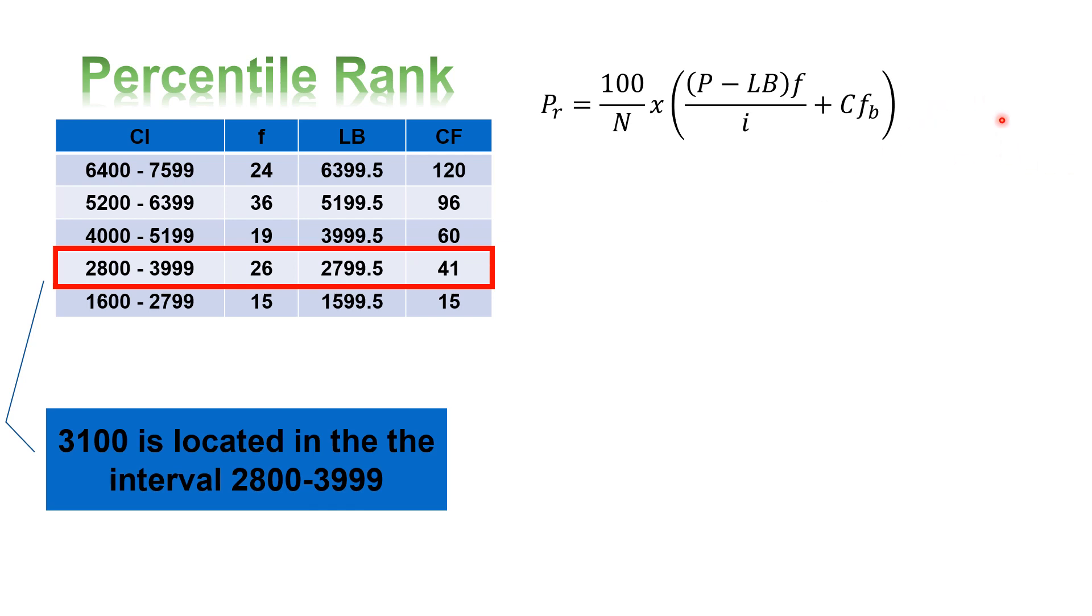Your N is equal to 120. P is 3,100. Lower boundary is 2,799.5. The frequency is 26. Your interval is 2,800 minus 1,600. And the cumulative frequency below is 15.